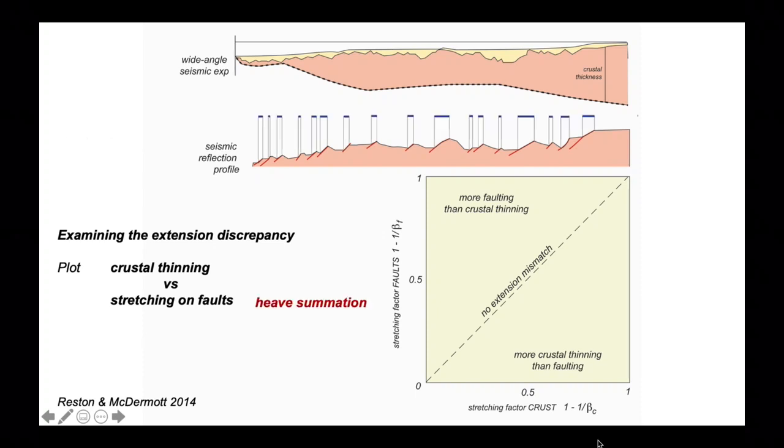How was stretching on faults estimated? Through heave summation. You recognize the horizontal component of displacement on all those little escarpments assumed to be fault scarps. Add together all those little blue bars and it gives you the total heave. Working out the crustal thinning is simply to measure the thickness of the crust at any given point on the profile and relate it back to an unstretched thickness of crust beneath mainland Iberia. Here's the relationship. We can see there's much more crustal thinning than fault heave. The cross shape gives an idea of the uncertainty in these values. But it sits nowhere near the no extension mismatch line. There's clearly an extension mismatch.